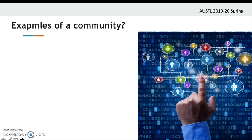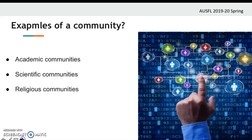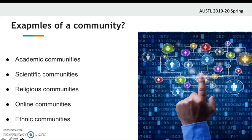As an example of a community, we can mention an academic community, a scientific community, a religious community, or an online community. Ethnic community is another one, which means their ethnical background makes them come together.